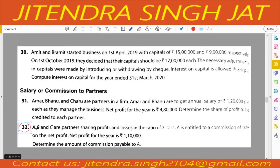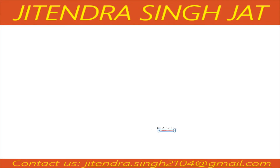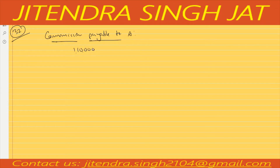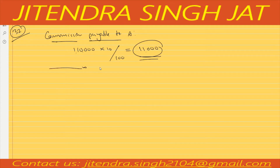Question number 32: A, B and C are partners sharing profits and losses in the ratio of 2:2:1. A is entitled to a commission of 10 percent on the net profit. Net profit is 1,10,000. Determine the amount of commission payable to A. It is very simple — 1,10,000 multiplied by 10 percent, divide by 100, equals 11,000. Commission payable to A is 11,000.